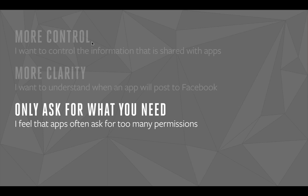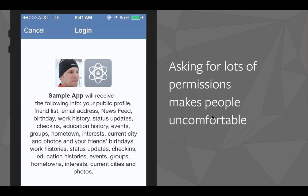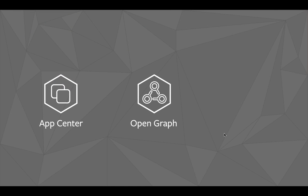To address this issue, we took a hard look at our Login Dialog. Even just two different apps asking for so many permissions negatively impacts the entire ecosystem, including great apps that only ask for permissions that they need. So we decided to add a new Login Review to our existing review processes for App Center and Open Graph. Here's a quick video of one of our reviewers explaining what Login Review is.